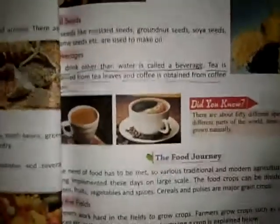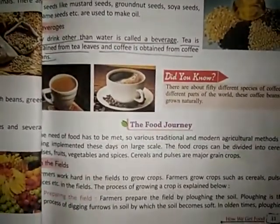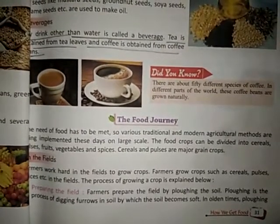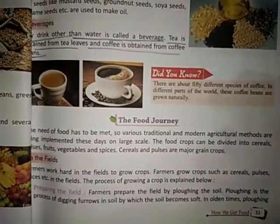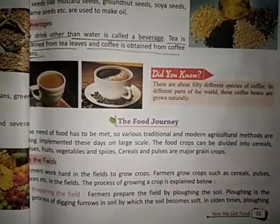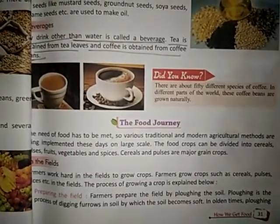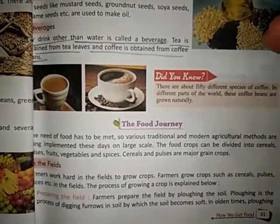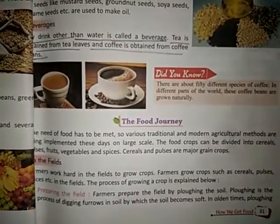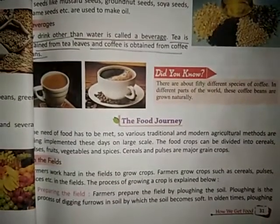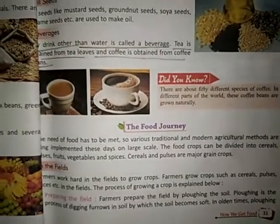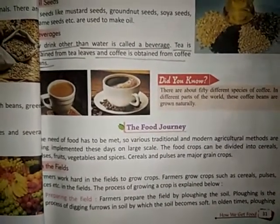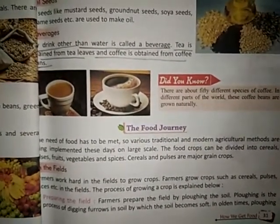The food journey. These days, on a large scale, the need of food has to be met. So various traditional and modern agriculture methods are being implemented. The food crops can be divided into cereals, pulses, fruits, vegetables and spices. Cereals and pulses are major grain crops.